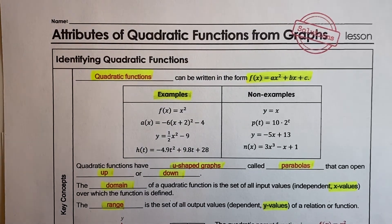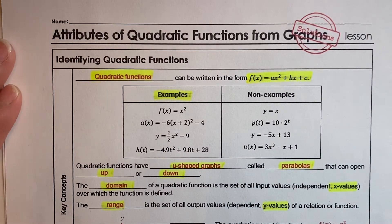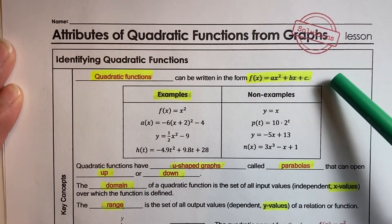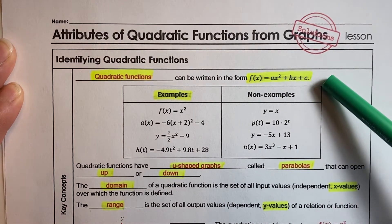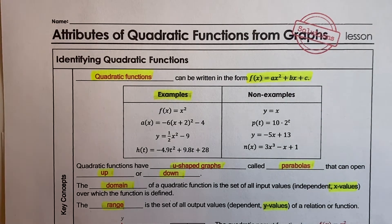In this video, you're going to learn about attributes of quadratic functions from a graph. Here are some examples. A quadratic function can be written in standard form: f of x equals ax squared plus bx plus c. You've seen this before when we factored.